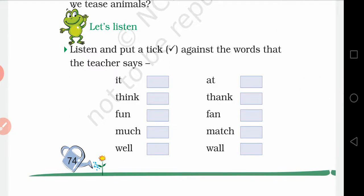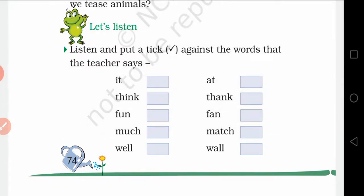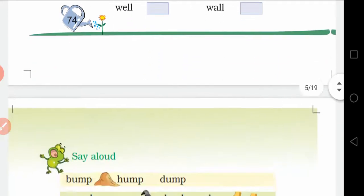Let's listen. Here are some words. First, I will tell those words in a zigzag order and you have to find out those words. Match - put a tick mark on the box given at the right side of the word: it, thank, think, at, much, match, fun, fan, well, wall, etc. Pronounce these words very loudly and check their spellings and remember them.